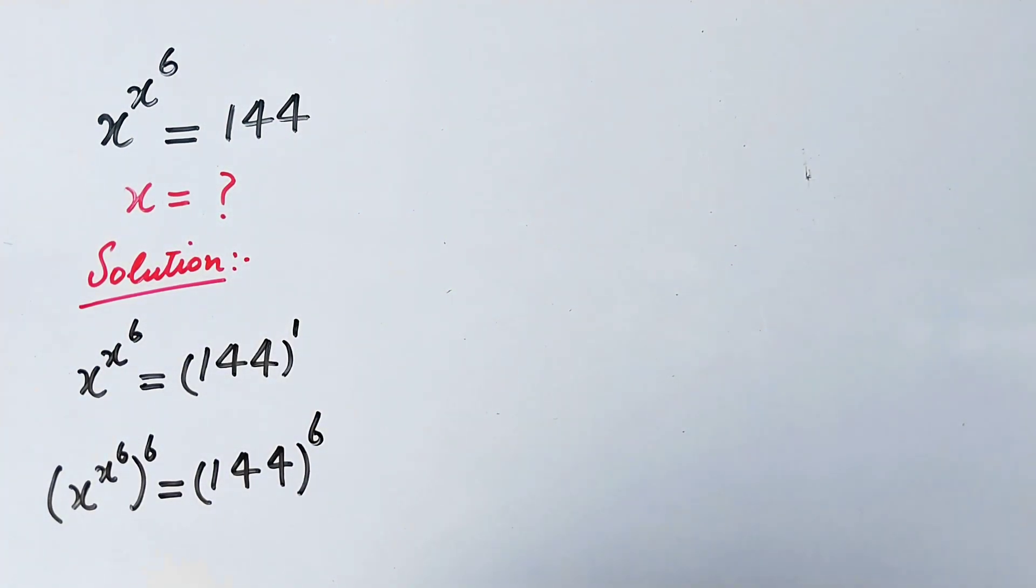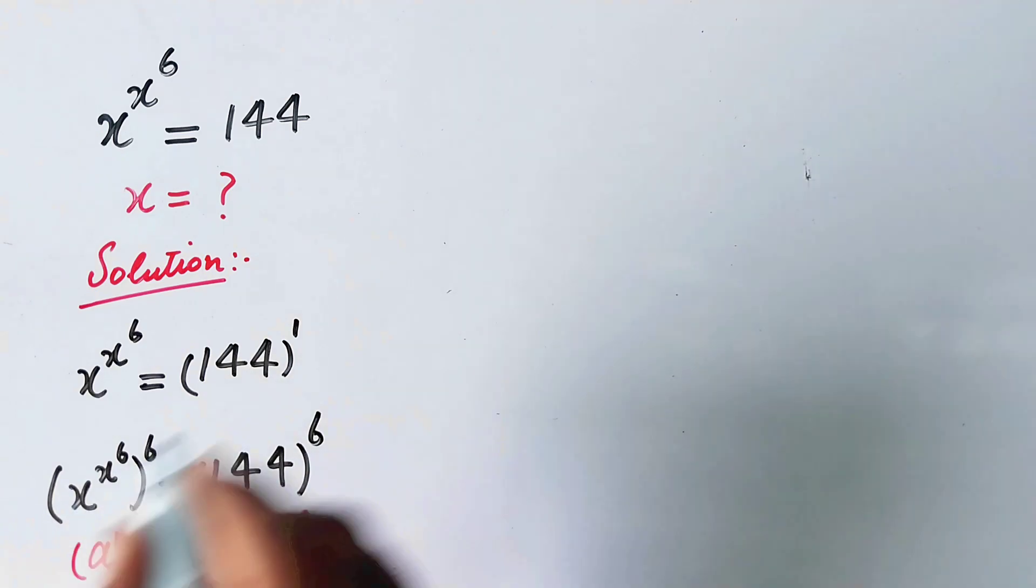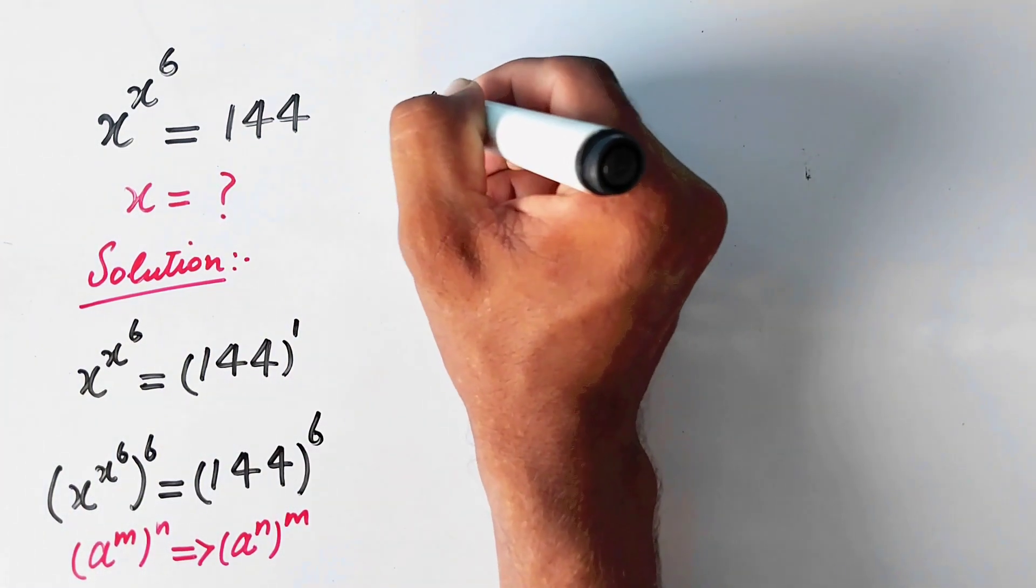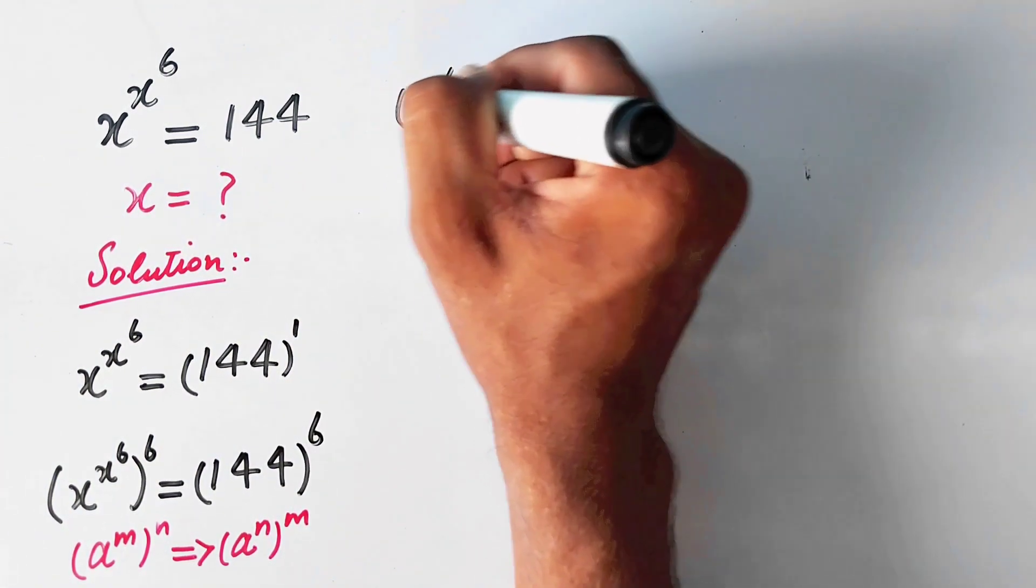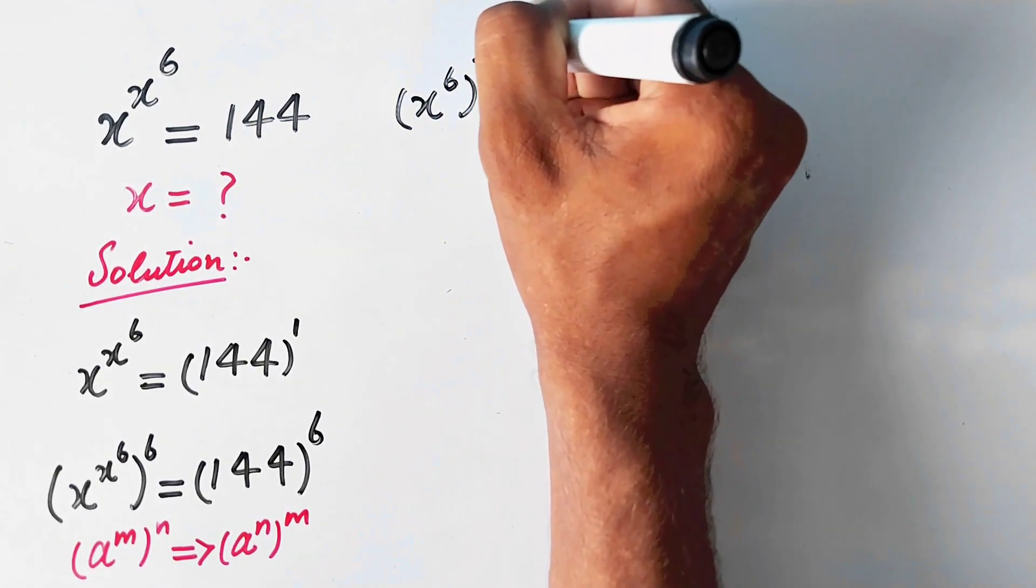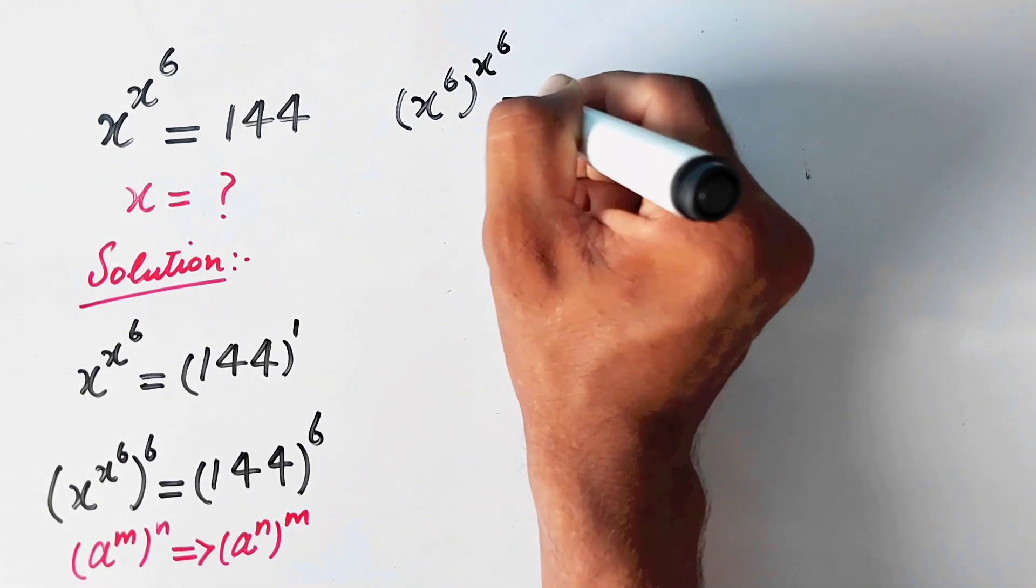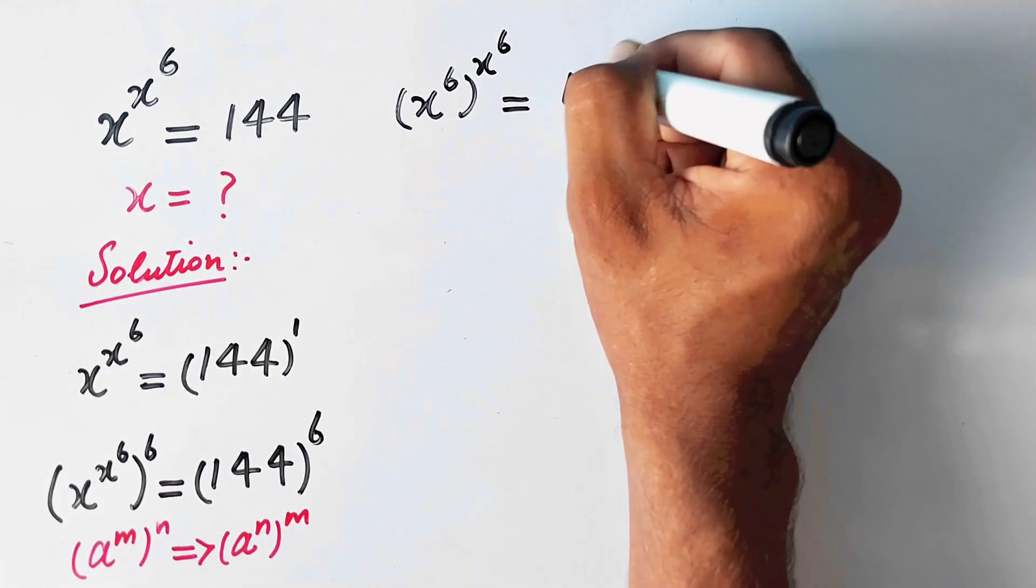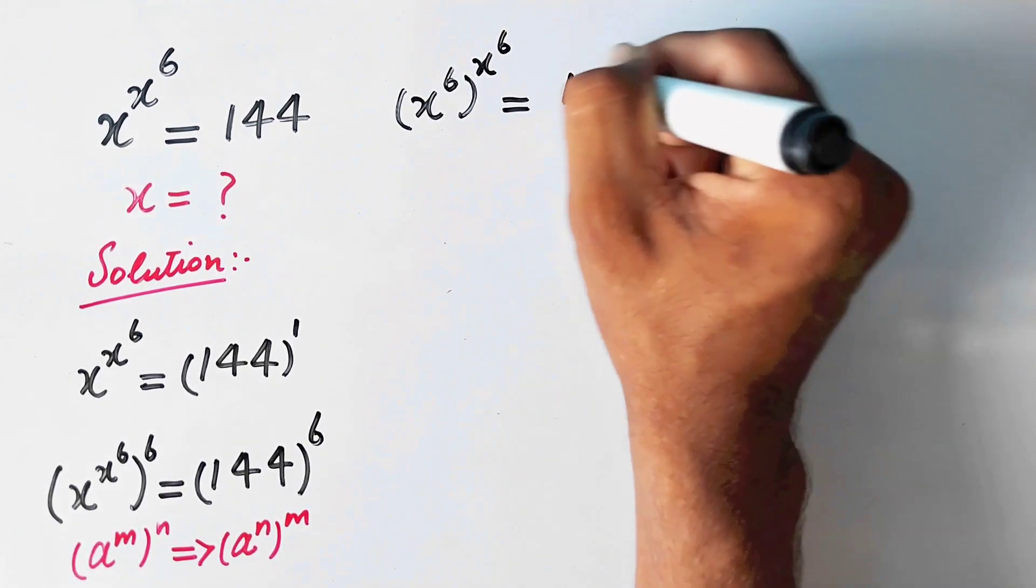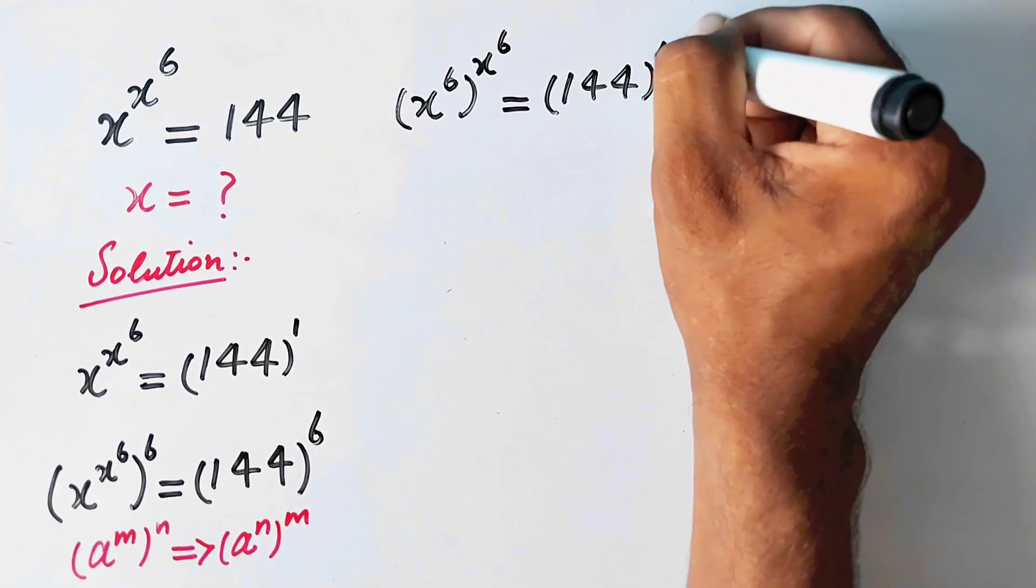An exponential formula is used: (a^m)^n can be written as (a^n)^m. So we can write this value as (x^6)^(x^6) equals 144^6.